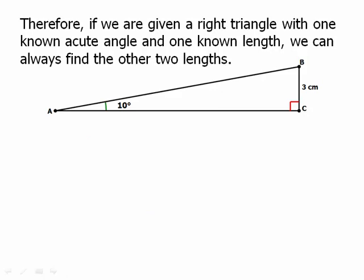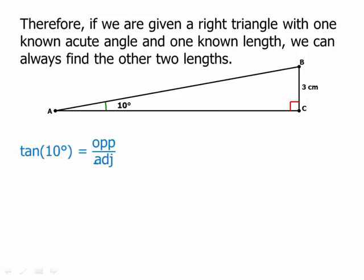We could also find side AC. We know that the tangent of 10 is opposite over adjacent. This would be 3 over AC. Same thing. Multiply by AC. Divide by tan 10.